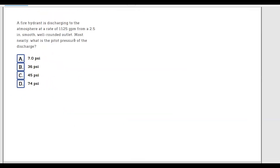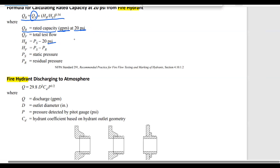Writing the formula: Q equals 29.8 × d² × CD × P^(1/2). The diameter is 2.5 inches as given. Since the outlet is smooth and well-rounded, let's look up the CD coefficient in the FE handbook.